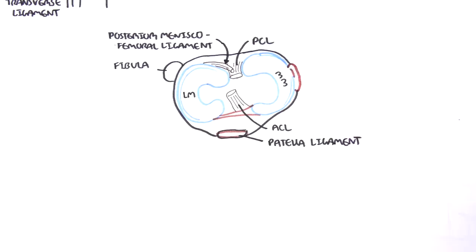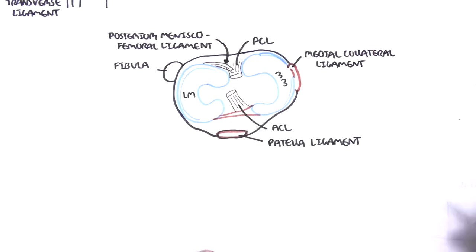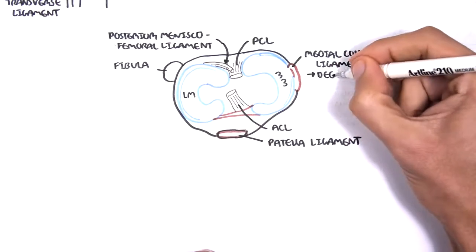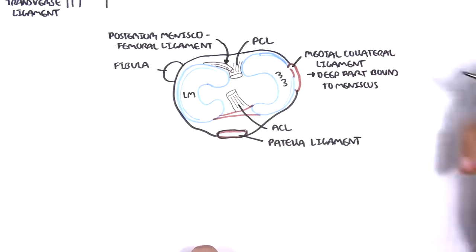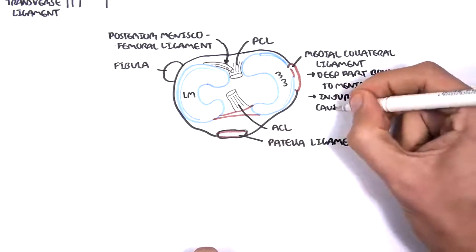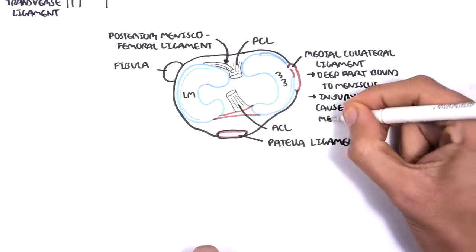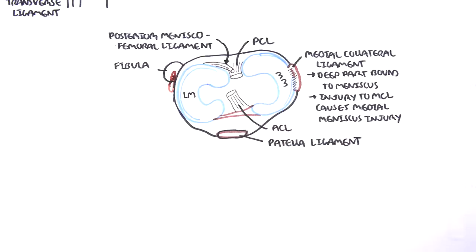The medial collateral ligament is quite important because it has a deep and superficial layer. The deep part of the medial collateral ligament joins actually with the medial meniscus. This means that injury to the medial collateral ligament can cause medial meniscal injury as well. The lateral collateral ligament here joins to the head of the fibula.